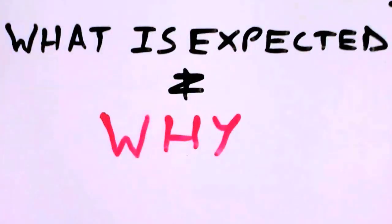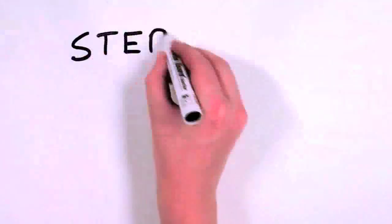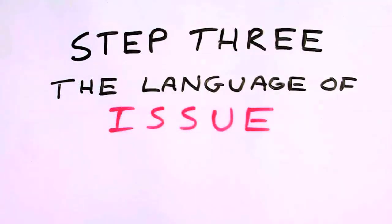Sometimes this doesn't work, however, which leads us to the third level, the level of escalation that we call the language of issue. We have now tried both coaching and also to highlight to the employee what the expected standards are, and the language of issue is the last step before we move to more formal action.